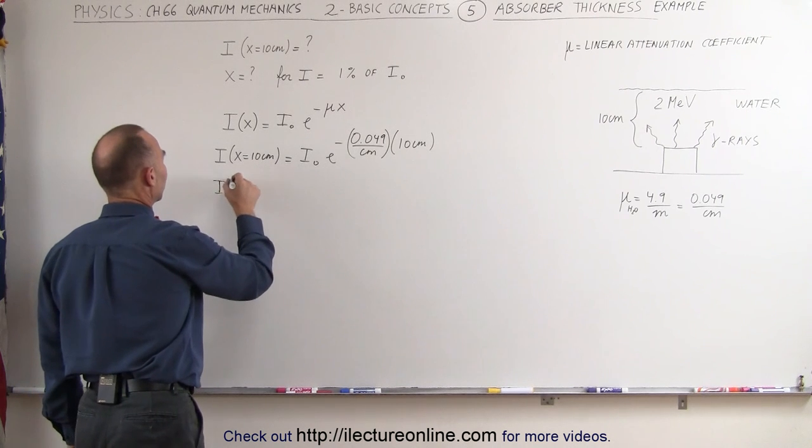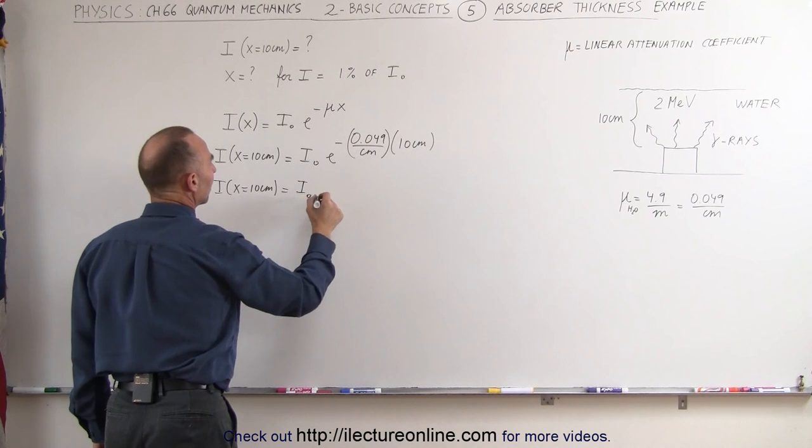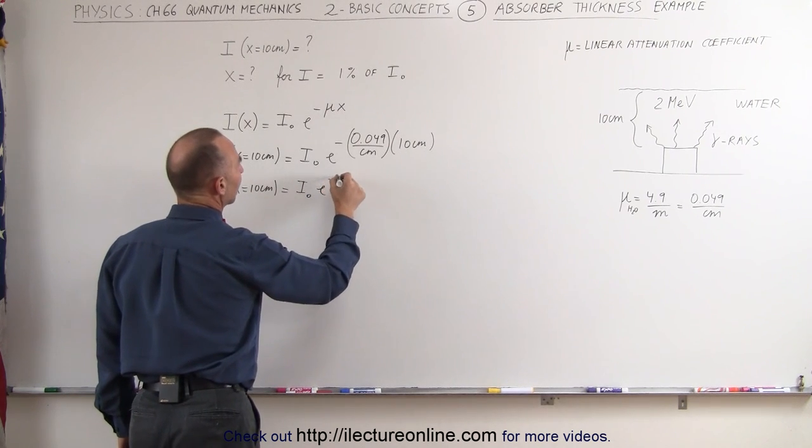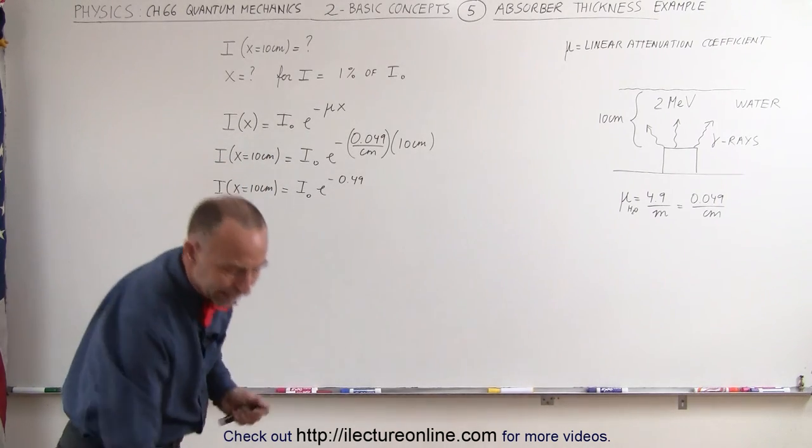I as x equals 10 centimeters is equal to I sub not times e to the minus 0.49 and at this point we need a calculator.